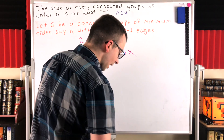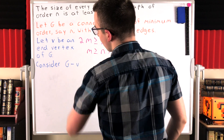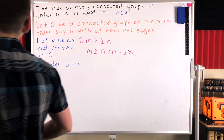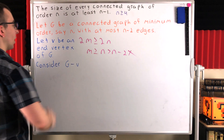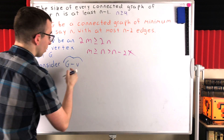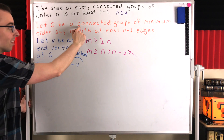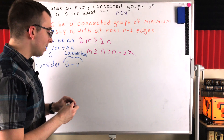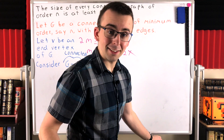We'll call that end vertex v and delete it. So let v be an end vertex of g — it's a vertex we proved had to exist. Now consider g minus v. We want to show that g minus v is actually a counterexample to our claim that has fewer vertices than g. First, g minus v has to be connected, because g is connected and you can't disconnect a connected graph by deleting an end vertex. So g minus v is connected. All we have left to do is show that g minus v doesn't satisfy our size condition.